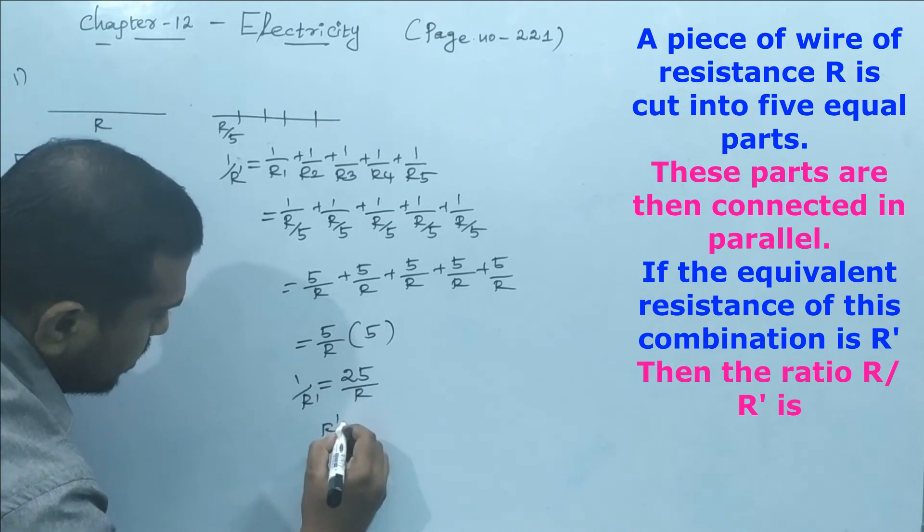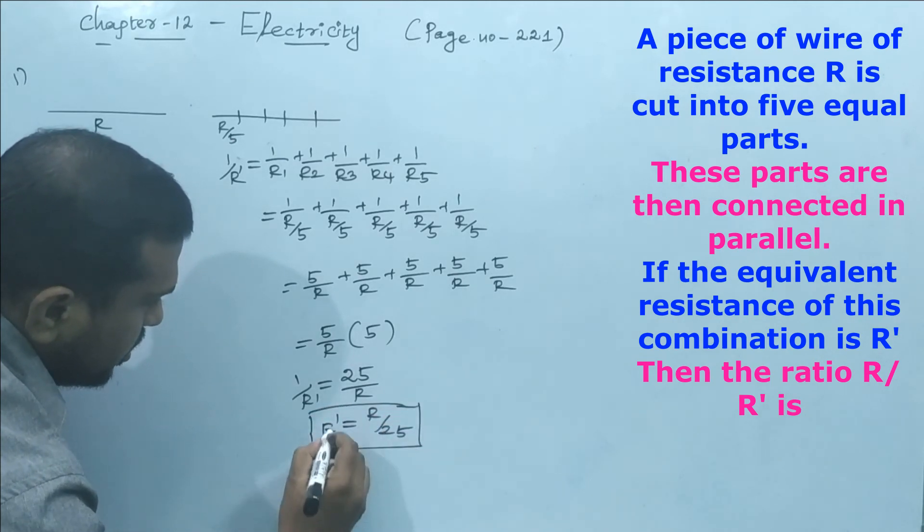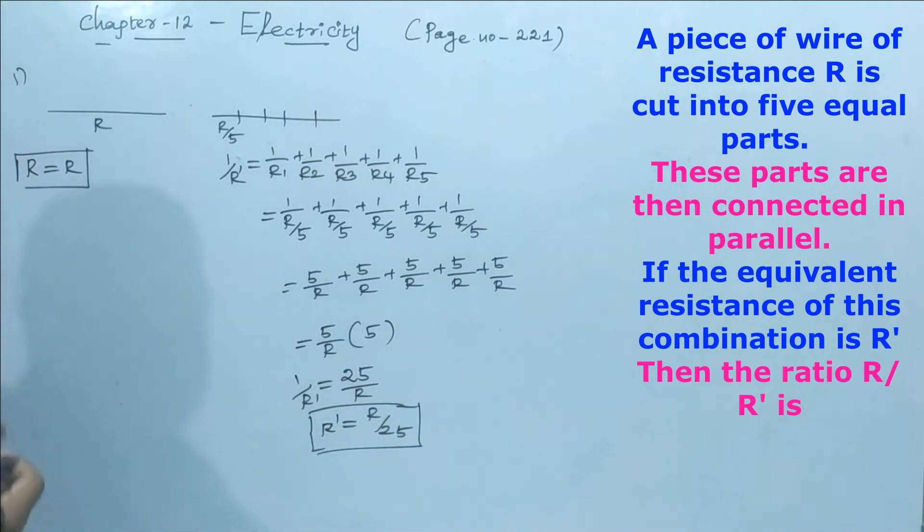We need only R', so R' is equal to R/25. Now we got the R' value. Now we have to find out the ratio. The ratio they are asking is R/R', which equals R/(R/25).